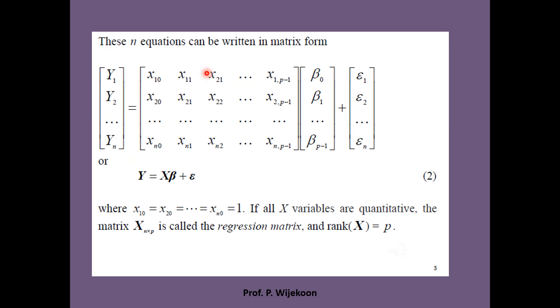By combining equations of all y variables, now we can write this matrix form. For all y variables, we have a n by 1 y vector. To represent all x values in each equation, we have the x matrix which is n by p.